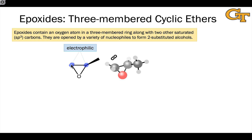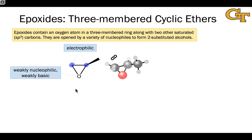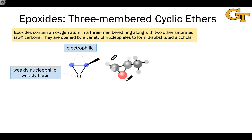Thanks to the polarization of the C–O bonds toward oxygen and the fact that this is a highly strained ring, both carbons in an epoxide ring are electrophilic. The epoxide oxygen, just like an oxygen in a plain vanilla ether, is weakly nucleophilic and weakly basic, due to the two lone pairs present at the epoxide oxygen.